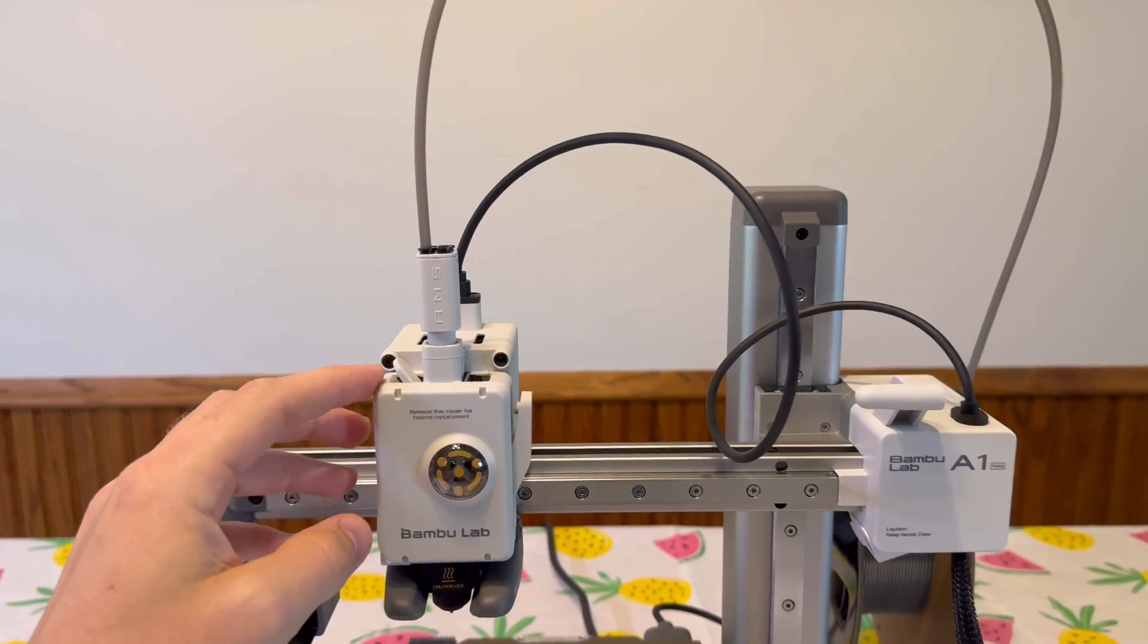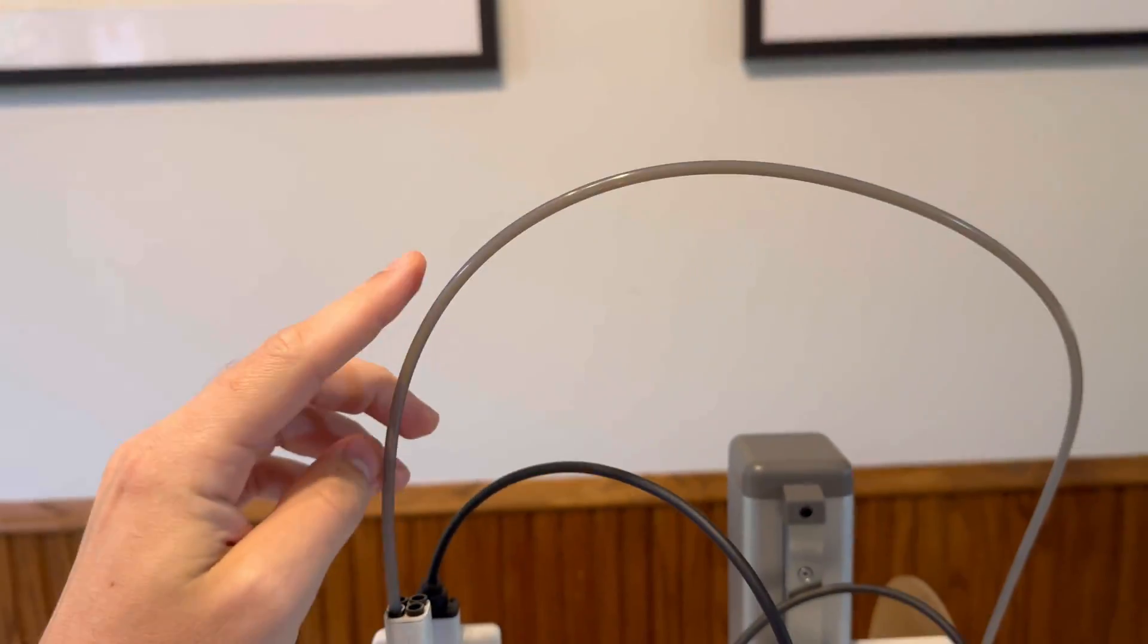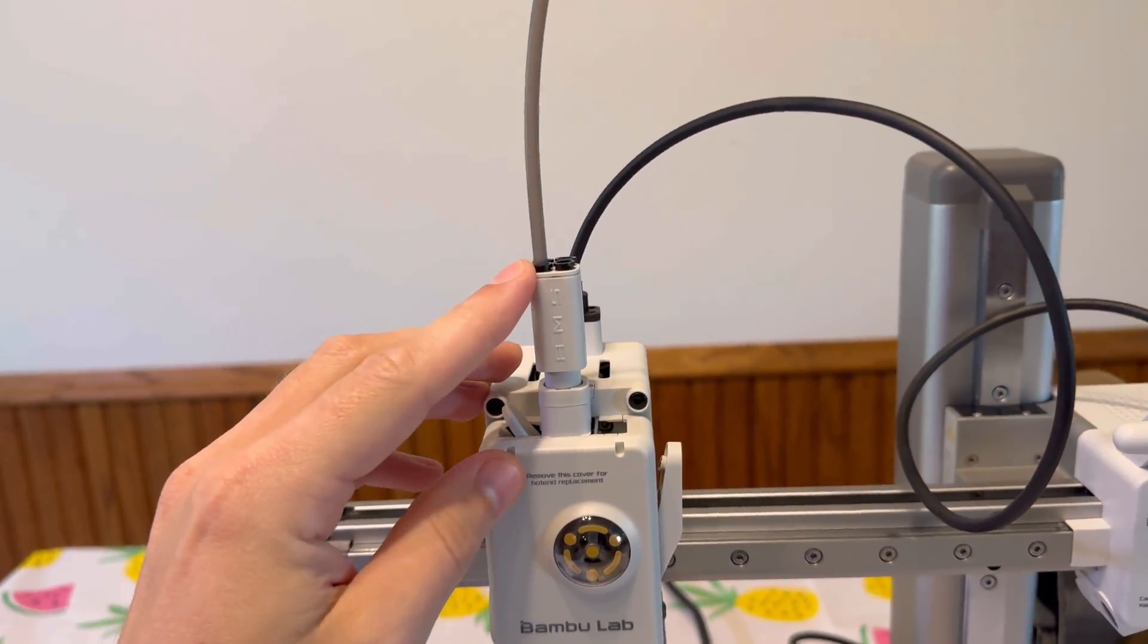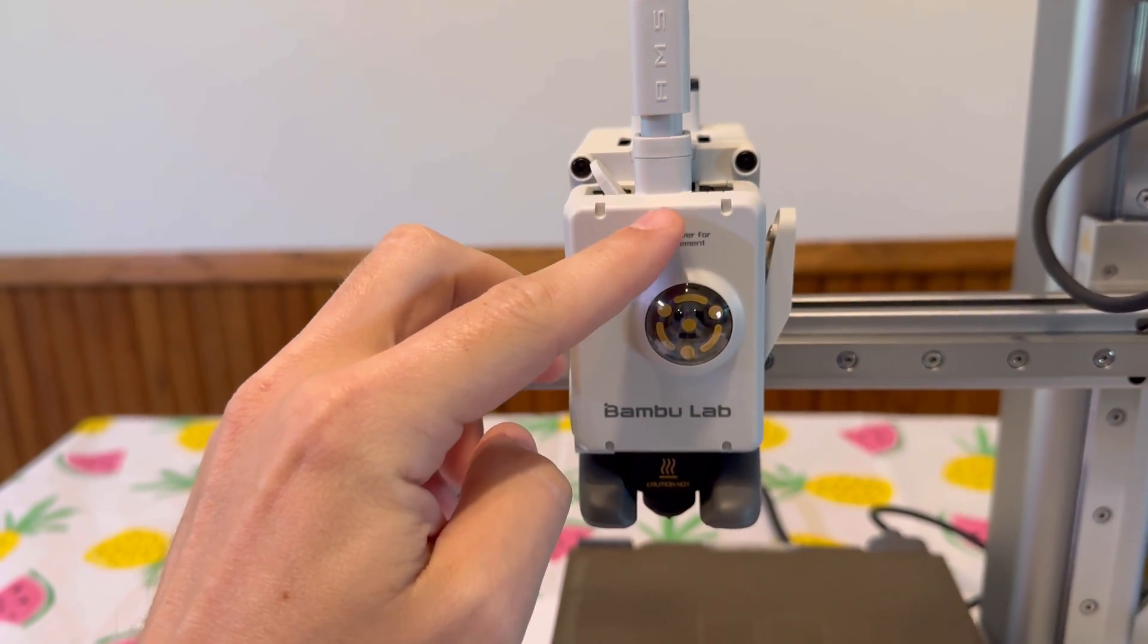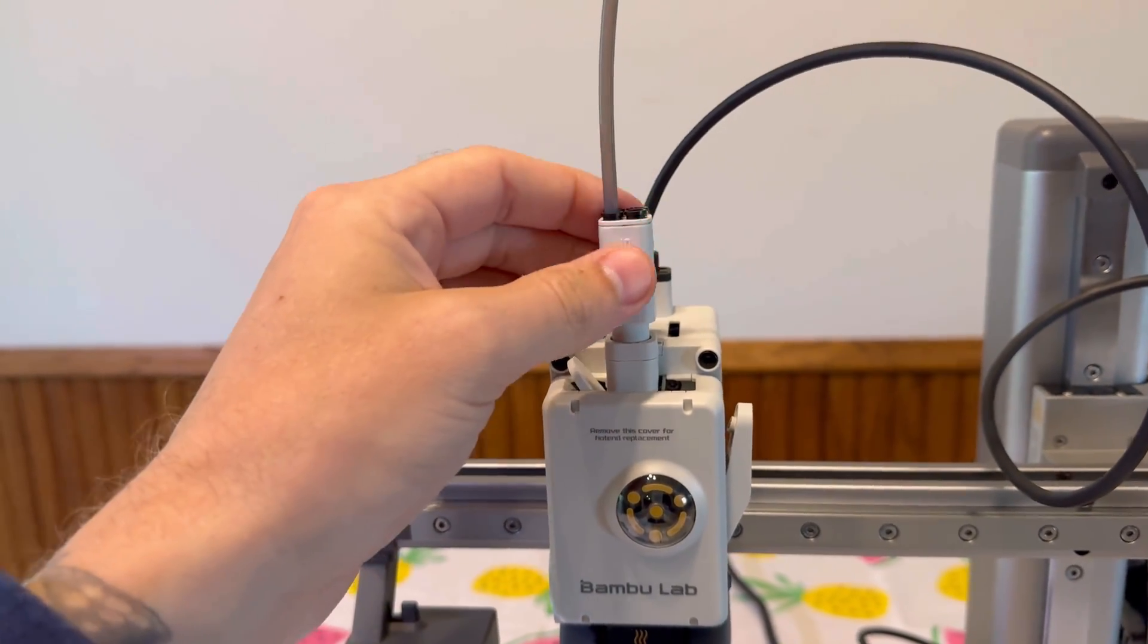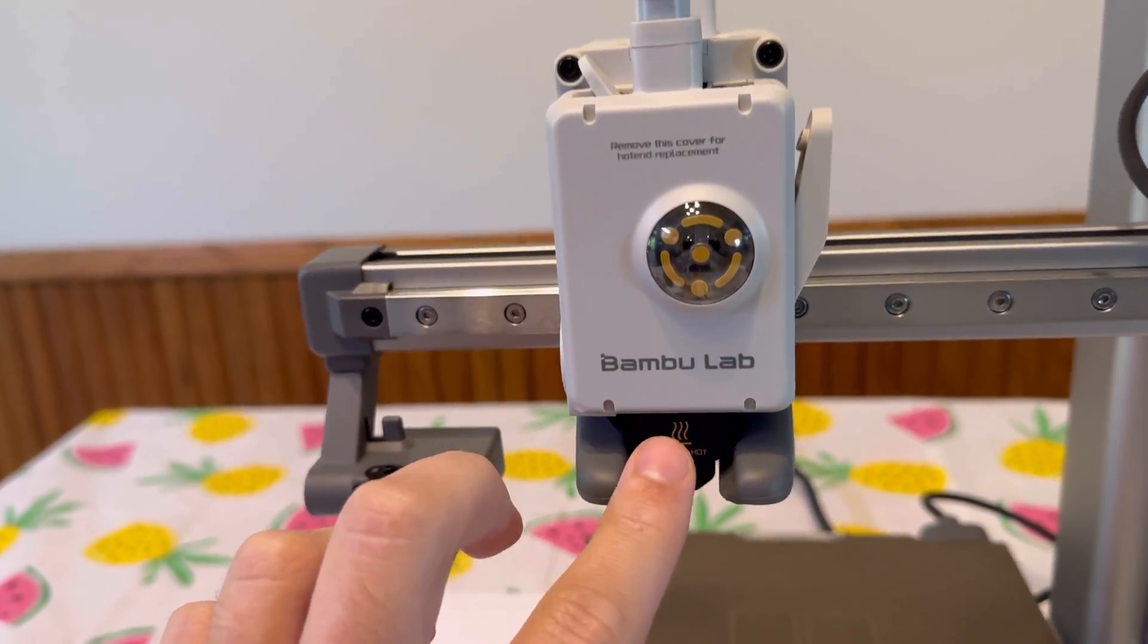What's happening here is the filament has to come through the PTFE tube, come through here, and somewhere along the lines, the filament is getting clogged in here. So it's either in this chamber here, or it's down here in the nozzle.